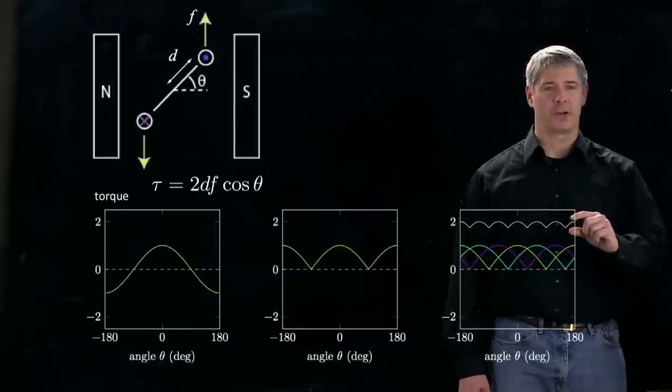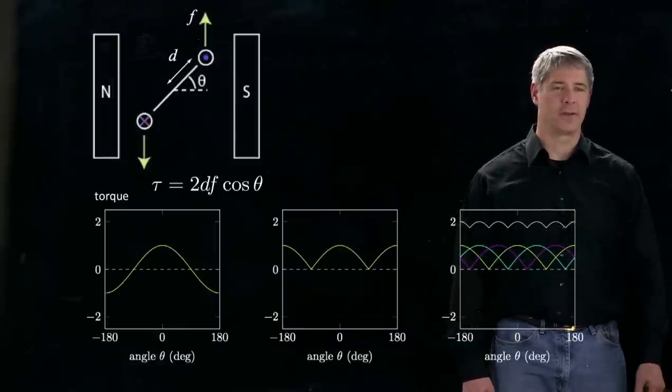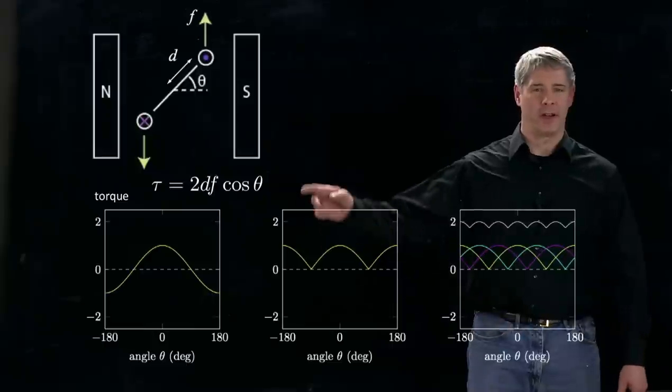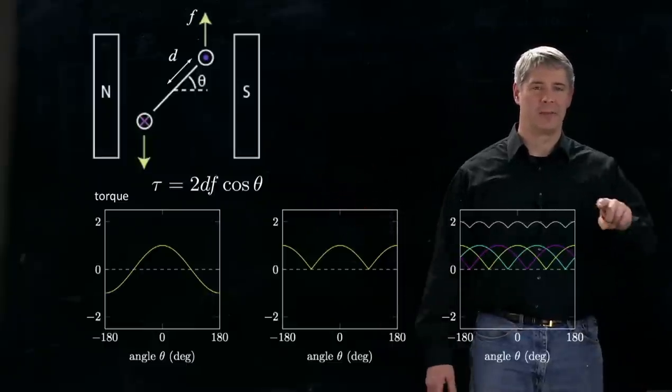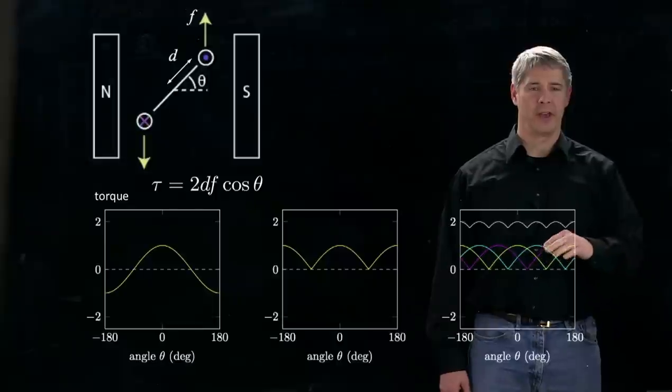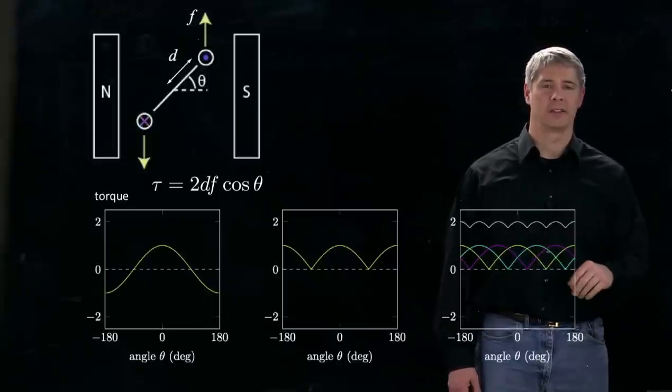This leftover variation in the torque as a function of angle is called torque ripple. So one way to get a motor out of current carrying loops is to set them offset from each other by some angle and to have enough of them so that when you add them all up you get a nearly constant torque.